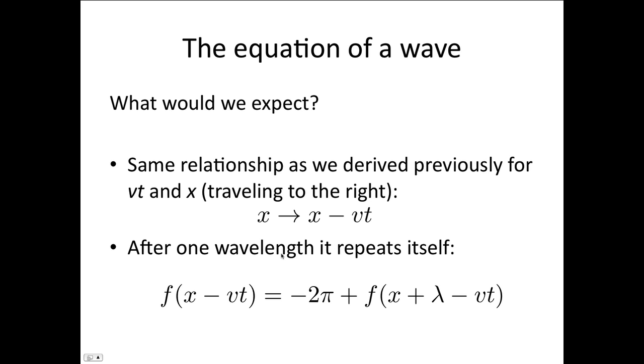Now, we'd also expect the wave to repeat itself after one wavelength. We said that the general form for a wave was a sine function. So we're going to be taking the sine of some function of x minus vt. So this function, the f of x minus vt, is going to give some answer in radians. We would expect that if x progressed by one wavelength, so in time that would be one period, then it's going to be an additional 2π on. So we would expect it to have the relationship f(x - vt) = -2π + f(x + λ - vt).